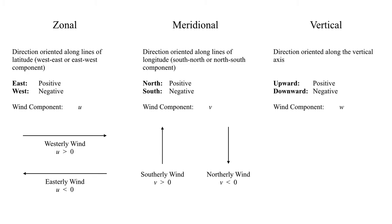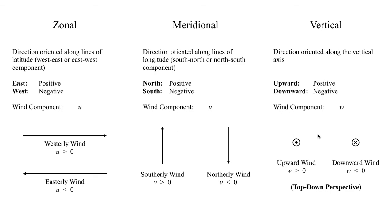Last but not least, the vertical direction is essentially the same as the z-axis on a standard Cartesian grid. Going straight upward is defined as positive, just like a standard z-axis, and downward goes in the negative vertical direction. The symbol we use to denote the wind in the vertical direction is lowercase w. So: u is the zonal component, v is the meridional or north-south component, and w is the vertical component — symbols we'll encounter quite frequently when working with three-dimensional diagrams.